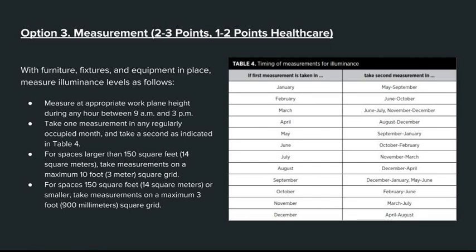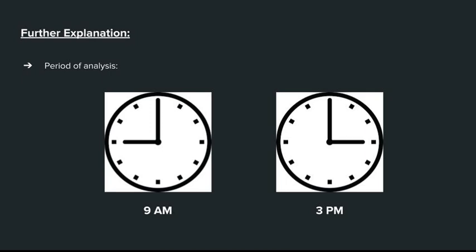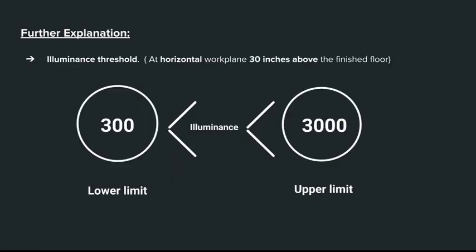For spaces larger than 150 square feet, take measurements on a maximum 10-foot square grid. For spaces 150 square feet or smaller, take measurements on a maximum 3-foot square grid. The period of analysis is at 9 a.m. and 3 p.m. on the Equinox — September 21st or March 21st — adjusted for daylight saving time and longitude. The illuminance threshold for analysis is 300 lux or greater and below 3,000 lux at the horizontal work plane, which is 30 inches above the finish floor unless otherwise defined.